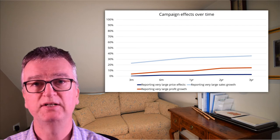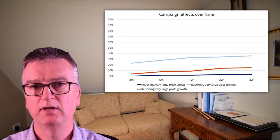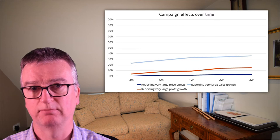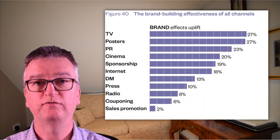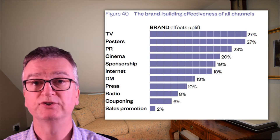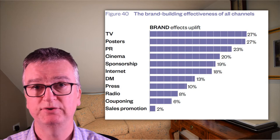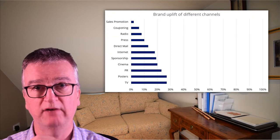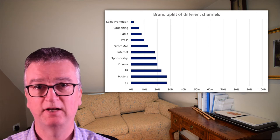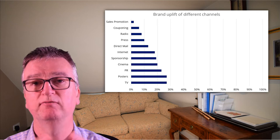Presenting this data might help a marketing department choose between one technique and another, but it does put us at risk of over-promoting something. Figure 40, for example, shows that TV and posters are the two channels with the strongest effect on brand uplift, but it's still only 27% successful. That result should be presented like this — the data in both of those last two charts is the same; it just creates a very different visual impression.